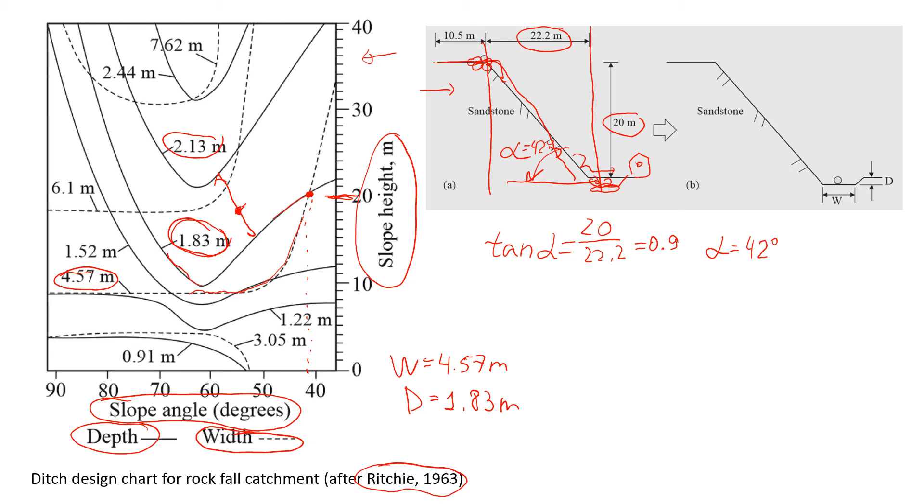So you have to interpolate between 6.1 and 4.57. So okay, so this was actually a bit simple example.